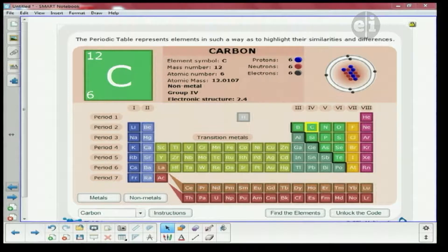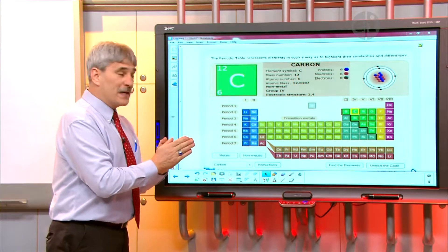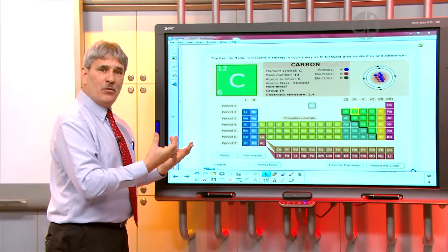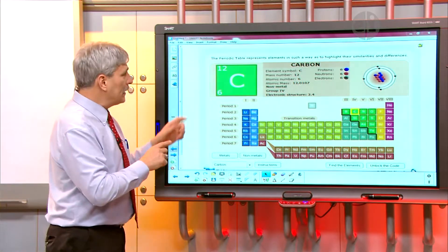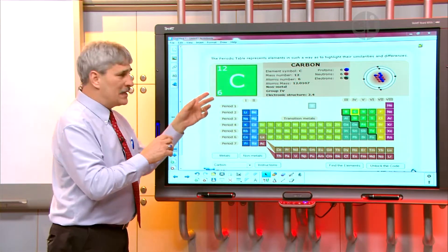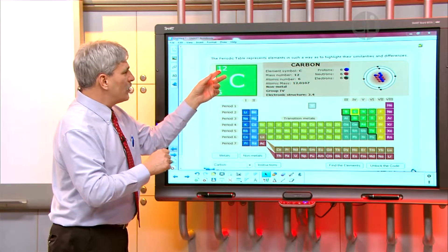We just said that the atomic number, which is six, is the number of protons. That would tell us the number of protons the atom has, but it would also tell us the number of electrons. All atoms are neutral charge because they have the same number of positive protons and the same number of negative electrons.